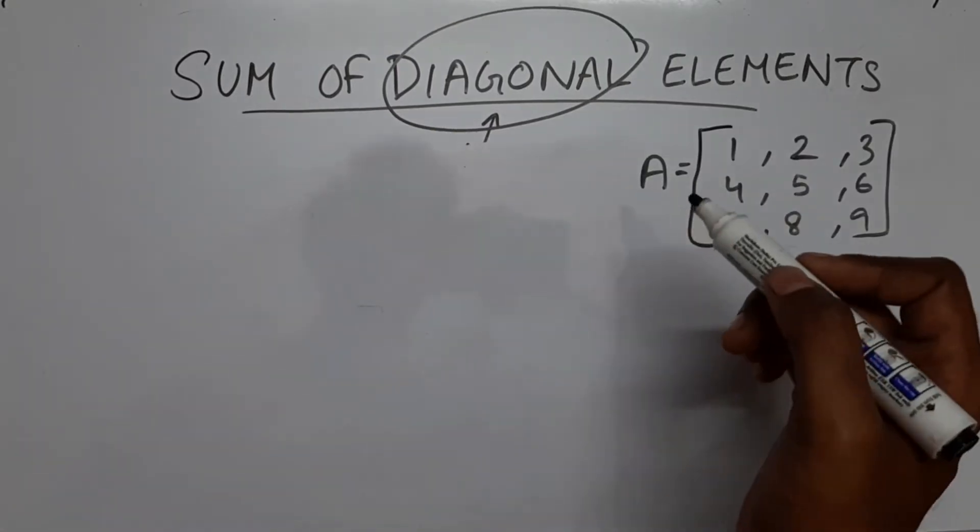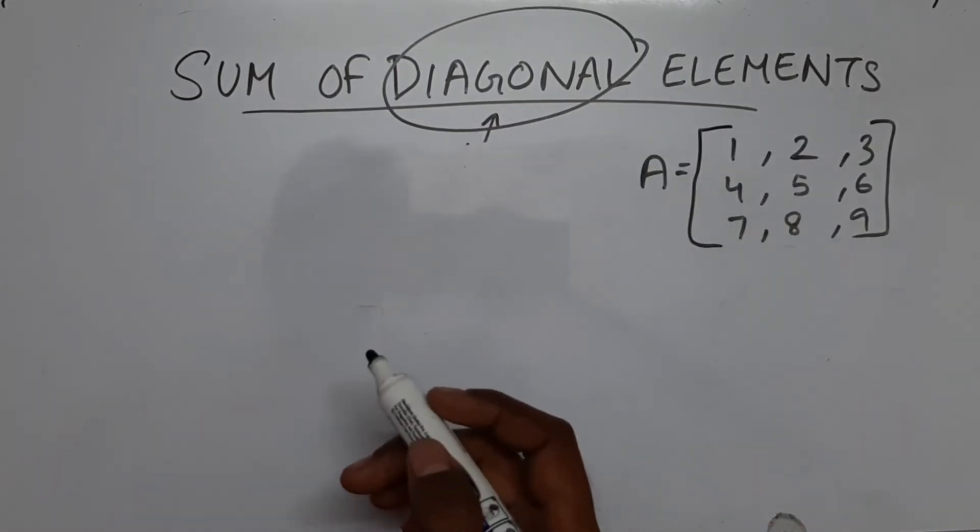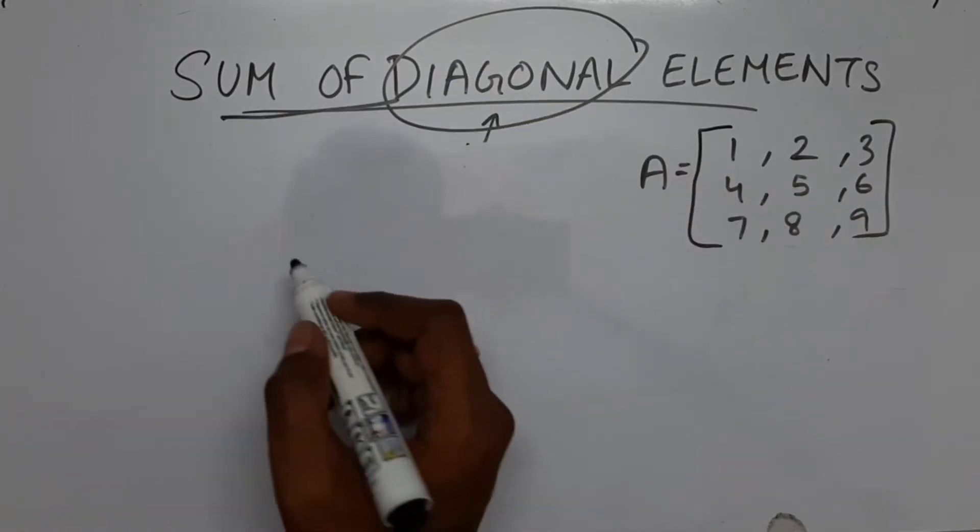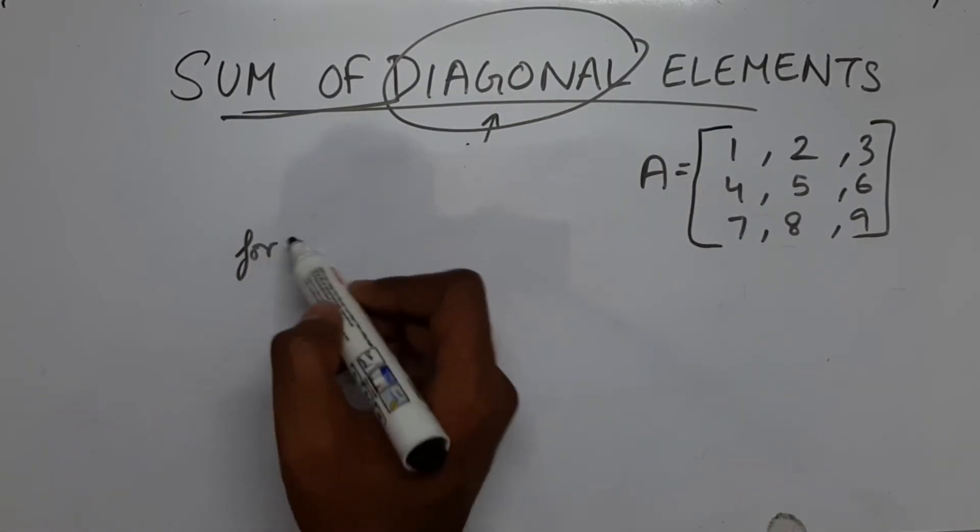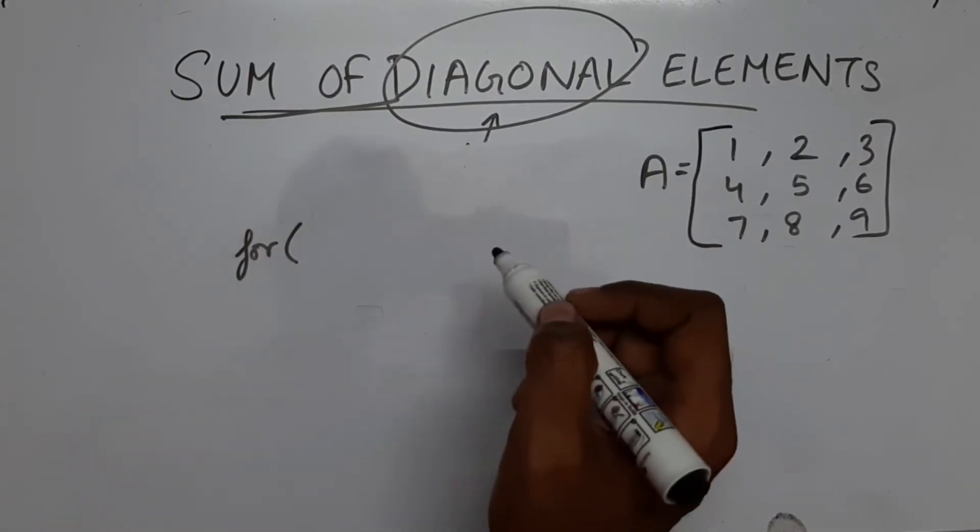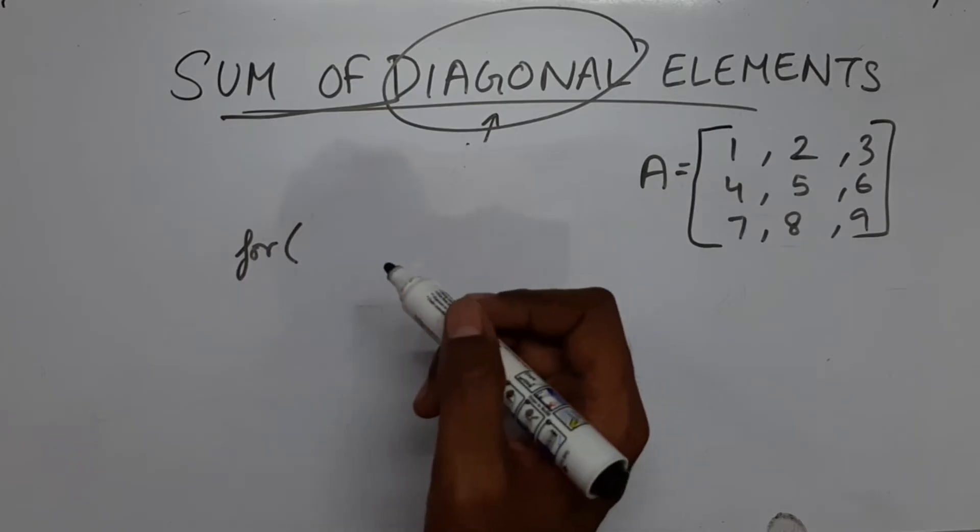Let's say this is the array A. Now let's write the code logic to find the sum of the diagonal elements. So directly I am going to use for loop instead of declaring function and declaring the array. I hope you students can do that.